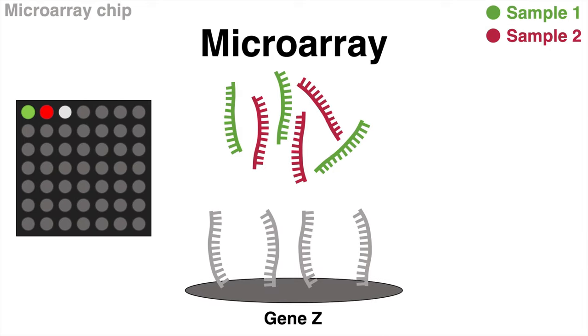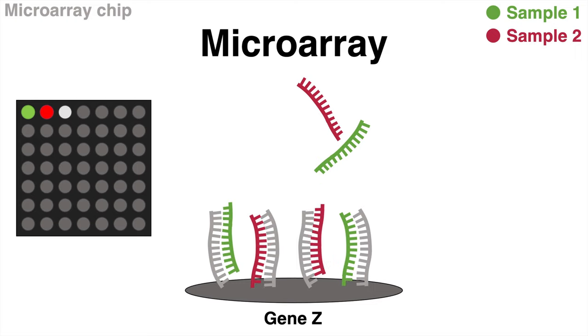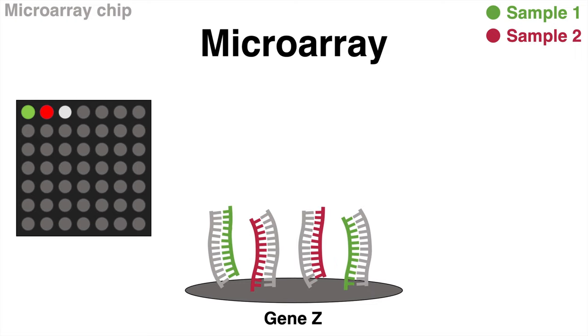The third possible scenario is that both samples contain molecules that may hybridize with a gene's probe, as shown here for a hypothetical gene Z.